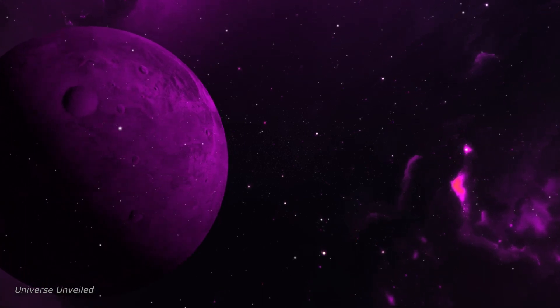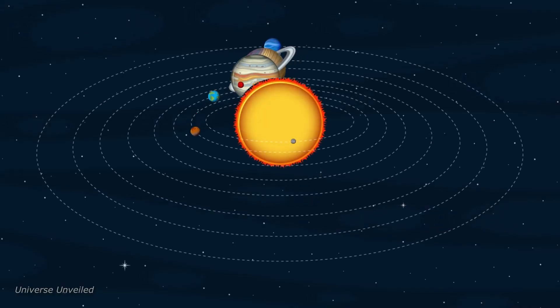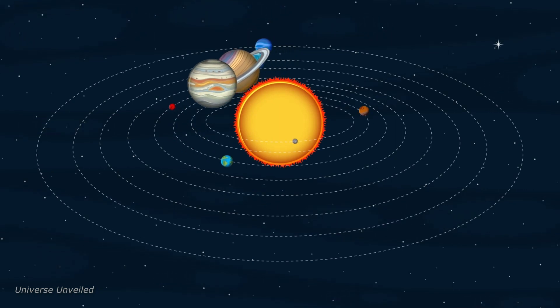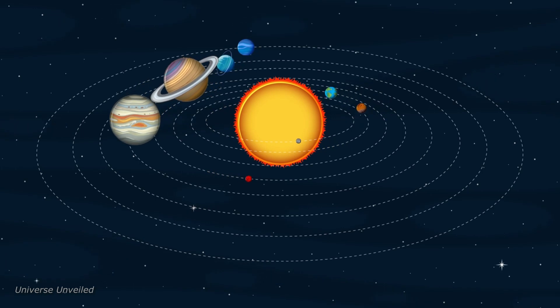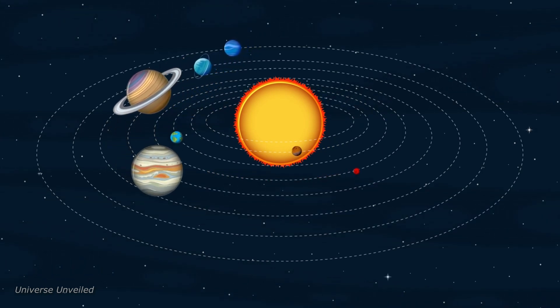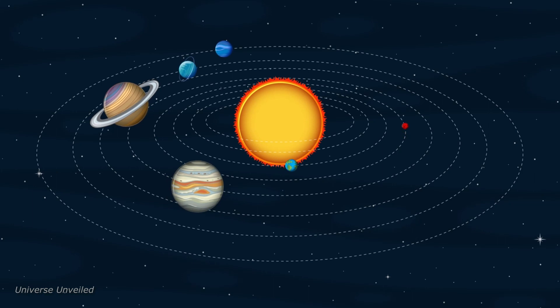The interstellar visitor, Oumuamua, with its water-rich composition and unusual trajectory, challenged our understanding of interstellar objects and underscored the importance of studying these celestial bodies for insights into planet formation.